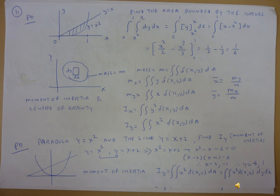Integrating x dx gives x squared over 2. Integrating x squared dx gives x cubed over 3. With limits 0 to 1, that gives one half minus one third, so the result is 1/6.